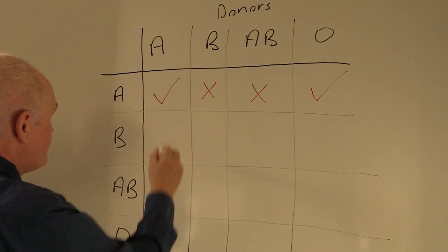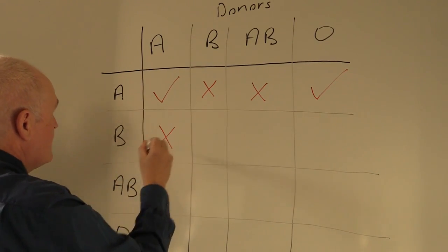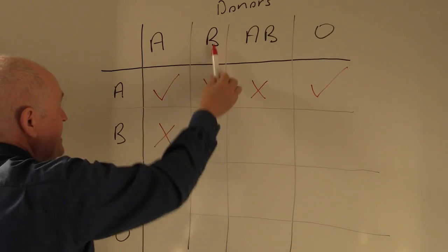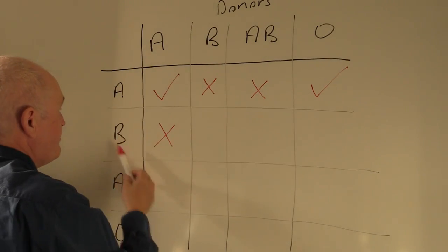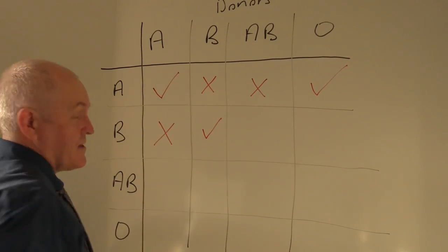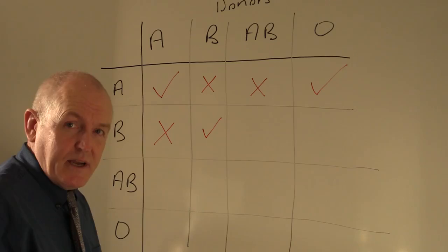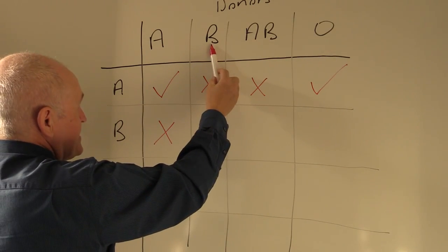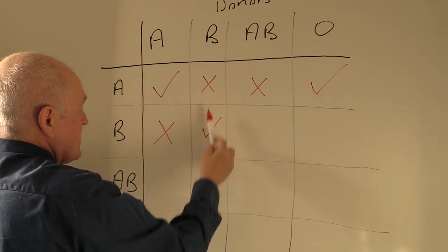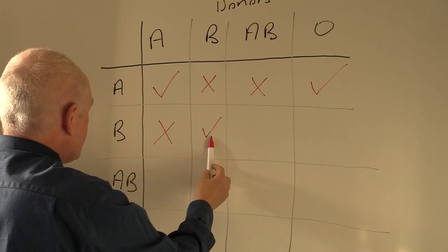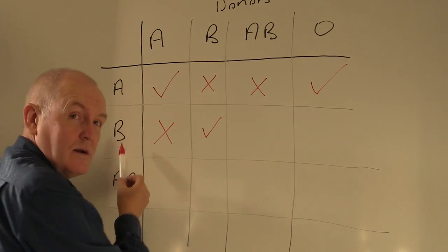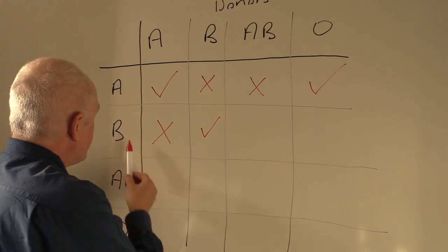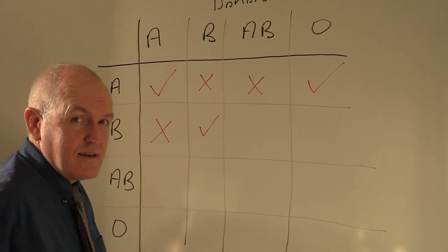If A gives to B, the group A antigens will be agglutinated by the A antibodies in the B recipient blood, so we can't do that. But B can give to B — the reason B can give to B is the B antigens will come into contact with the plasma with no anti-B antibodies to agglutinate and hemolyze the donated B erythrocytes.